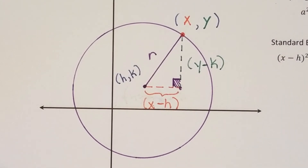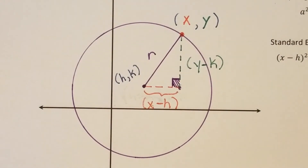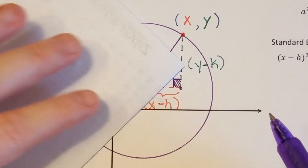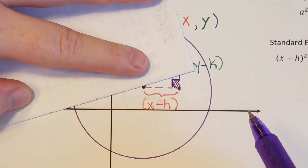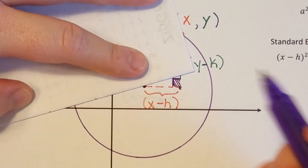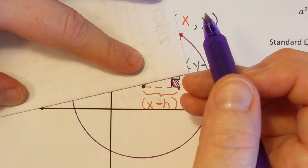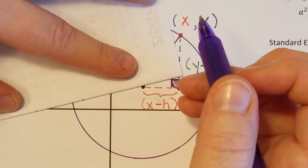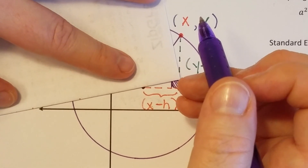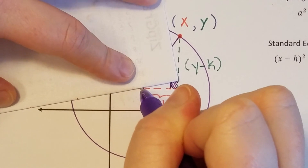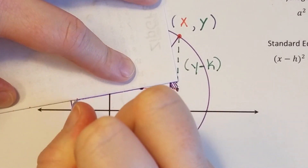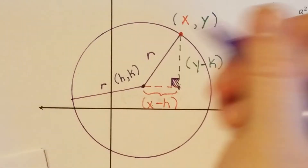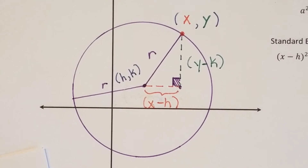So just real quick before we leave here — if I were to draw another radius over here, let's draw one. I want to make it so that the radius is not as steep. So this would still be r.